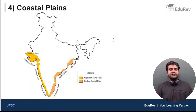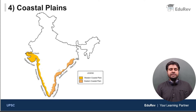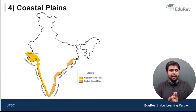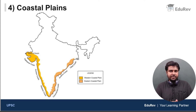Next we have the coastal plains. India has a western coastal plain and an eastern coastal plain. These coastal plains are very fertile and are some of the most productive agricultural regions in India. Especially the eastern coastal plain, which is called the rice bowl of India. We have to preserve and protect these coastal plains, because due to climate change and rise in sea levels, these coastal plains are threatened. We will discuss that in a detailed video.